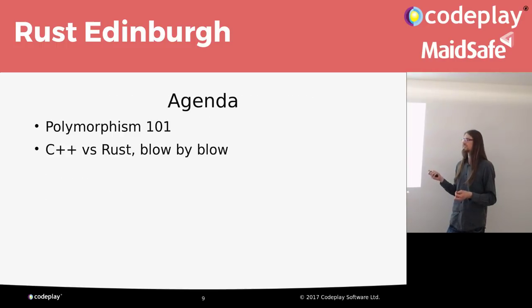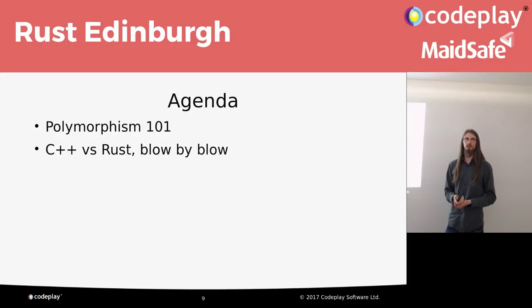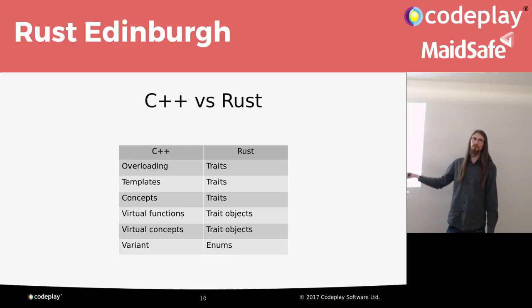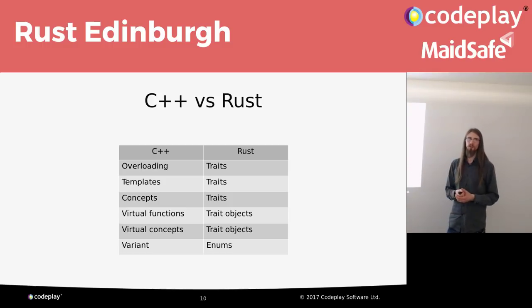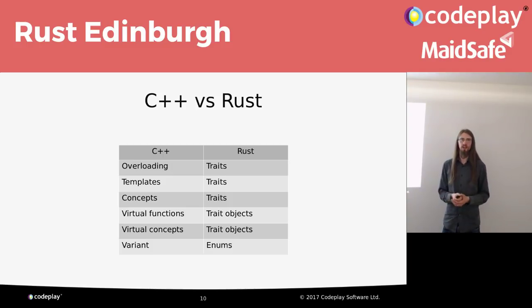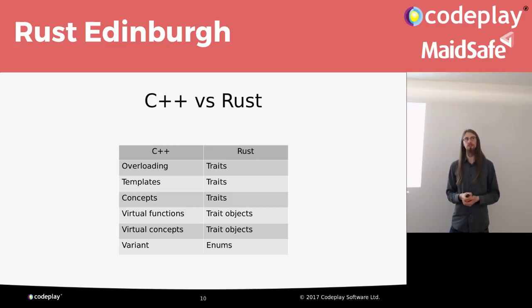That's my lightning tour of polymorphism, and now I'm going to compare C++ and Rust's approaches to some of these concepts. Here's a little table I made up. You might notice that C++ has a lot of different concepts which roughly map onto Rust's traits - either traits or trait objects, which are the dynamic version of traits. Down at the bottom we have variant, which maps onto Rust enums, which are very powerful if you're familiar with the C++ version of enums.